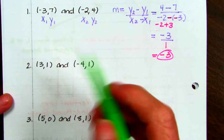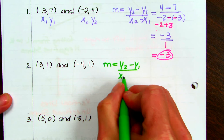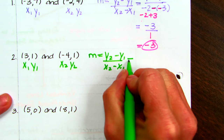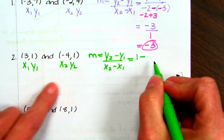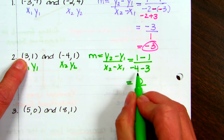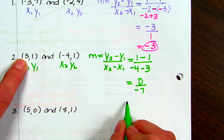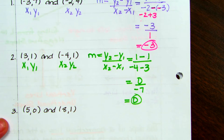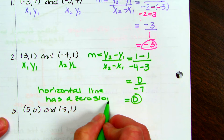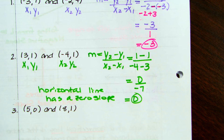For number 2, write the formula: m equals y2 minus y1 over x2 minus x1. Label your points x1, y1 and x2, y2. My y2 is 1, minus y1 which is 1, divided by x2 which is negative 4, minus x1 which is 3. On top, 1 minus 1 is 0. Negative 4 minus 3 is negative 7. So 0 divided by negative 7 is 0. A slope of 0 means a horizontal line — you can divide a number into 0, but you can't divide by 0.